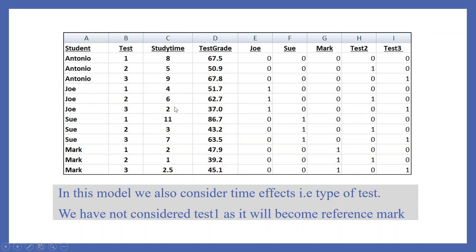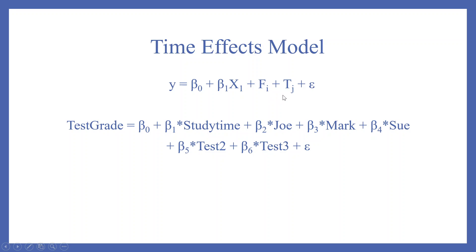Let's extend further. Now we also want to introduce dummies for the test. There are 3 types of tests, so the number of dummies will be 2. Test 2 is indicated by 1 where present and 0 elsewhere; similarly for Test 3. We will not create a dummy for Test 1 to avoid the dummy variable trap. So in this model we also consider time effects. The full model is: y = beta0 + beta1*x1 + phi_i + tau_j + error. That is: test grade = beta0 + beta1*(study time) + beta2*Joe + beta3*Mark + beta4*Sue + beta5*Test2 + beta6*Test3 + error.